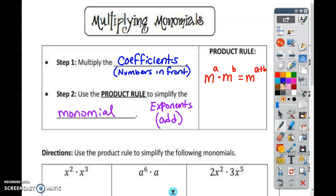For example, if I have m³ times m², what do I do with the 3 and the 2? You add them. So what's 3 plus 2? 5. So it would be m to the fifth power. You just add them. The exponents, you add them. The numbers in the front, you will multiply them.